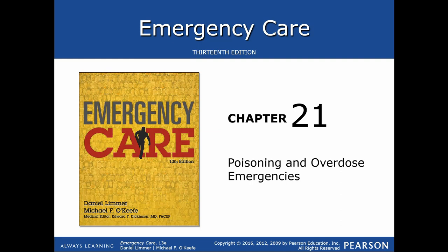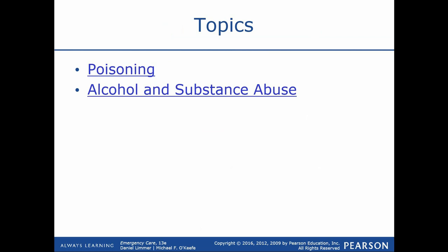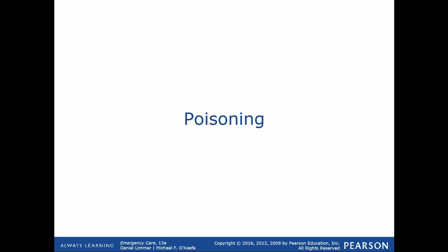Chapter 21: Poisoning and Overdose Emergencies. This chapter is going to give you a very broad overview of some of the many risks or hazards that exist in the form of poisons.